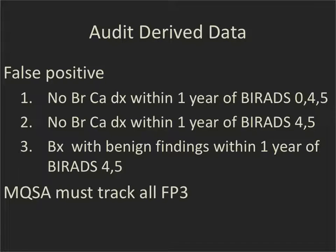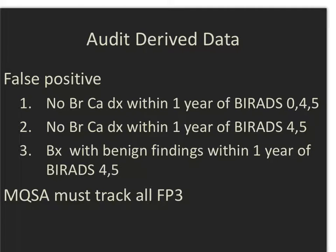There are effectively three types of false positive data. FP1 is no breast cancer diagnosis within one year of a BI-RADS 0, 4, or 5 — a higher number because it includes the BI-RADS 0 group. FP2 is no breast cancer diagnosis within one year of a BI-RADS 4 or 5. FP3 is a biopsy with benign findings within one year of a BI-RADS 4 or 5, noting that not all 4s or 5s go to biopsy. MQSA requires tracking of all FP3s, although most centers also include FP1 and FP2.